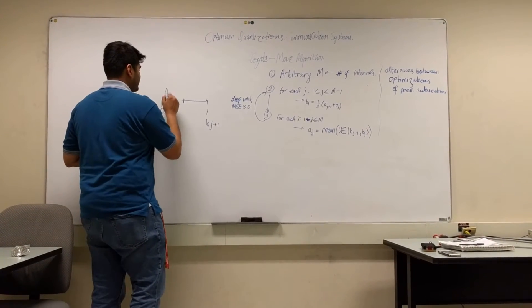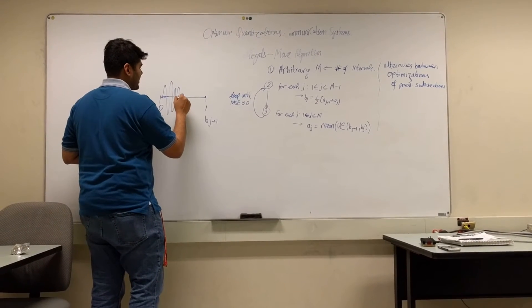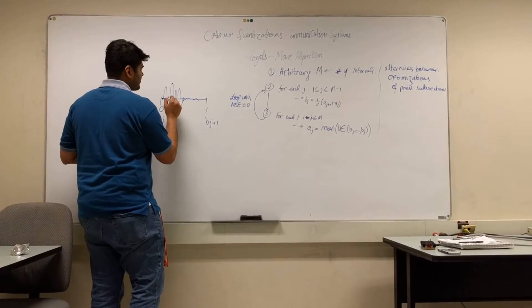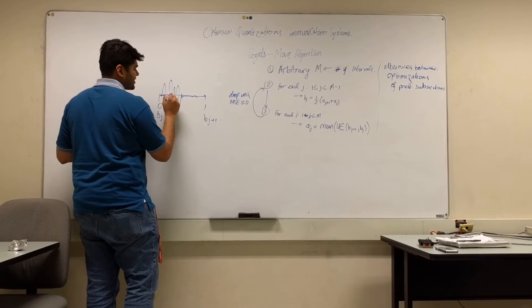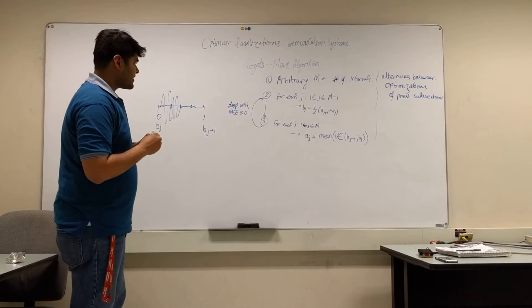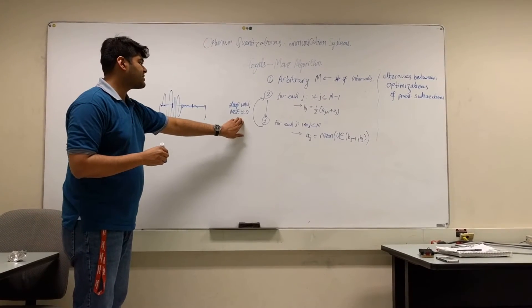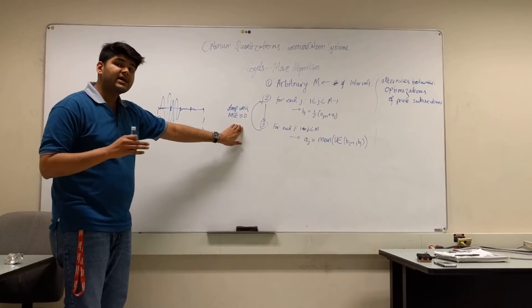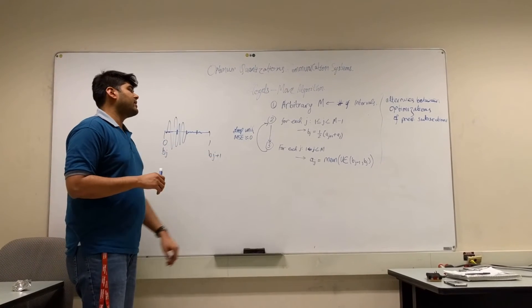For instance, if my signal is like that, and then like that, I would rather have my representation point somewhere over here than somewhere over here. So, essentially, we are keeping a track of the mean squared error, and we want to minimize it as much as possible.